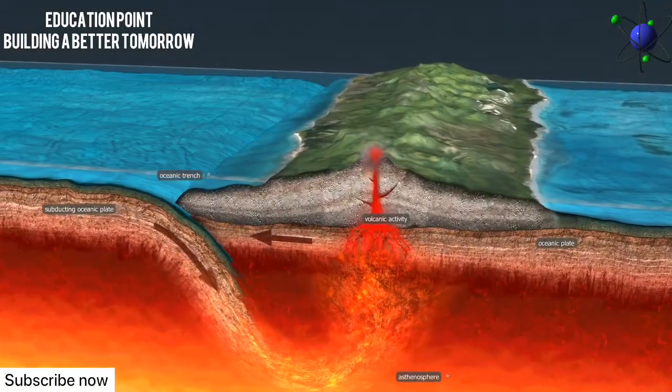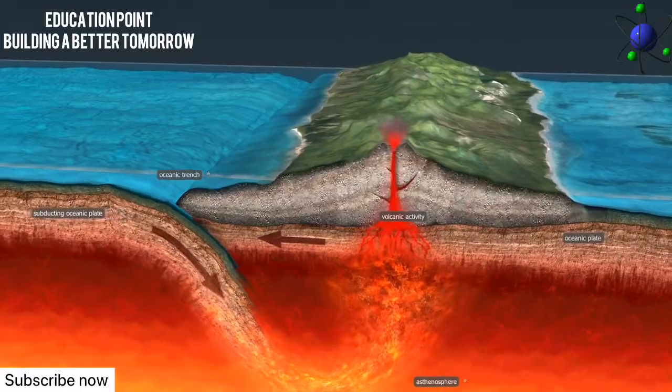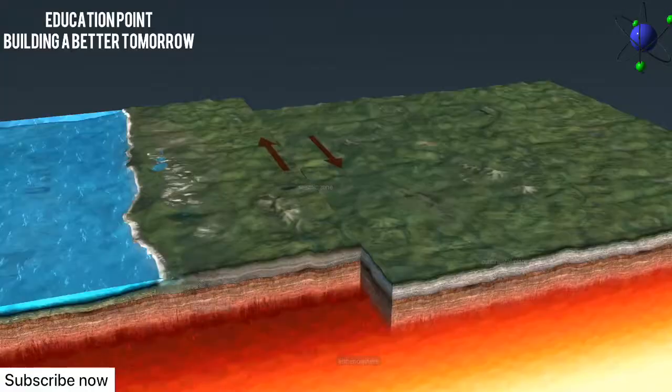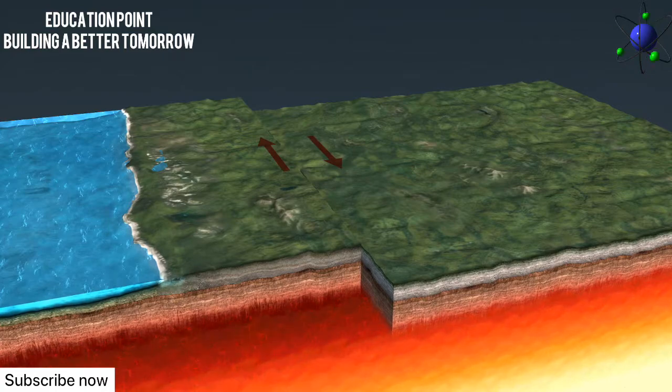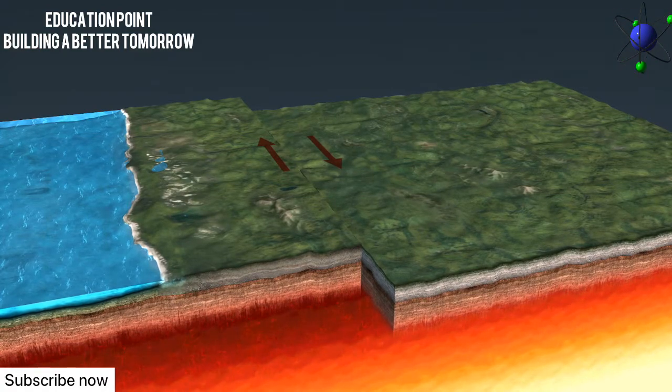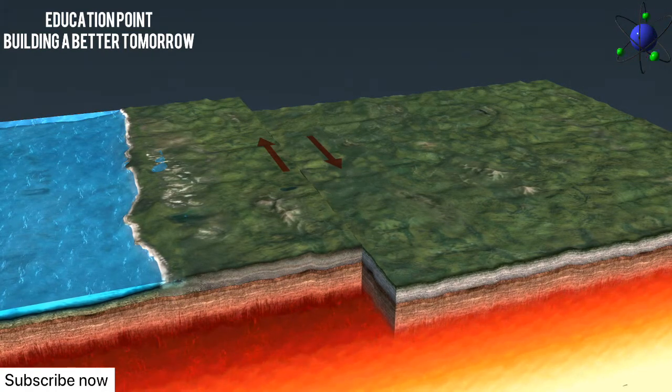The subducting plate moves into the asthenosphere, where it is melted and incorporated into the mantle. At subduction zones, volcanoes, fold mountains and deep-sea trenches occur.